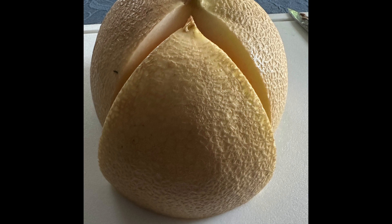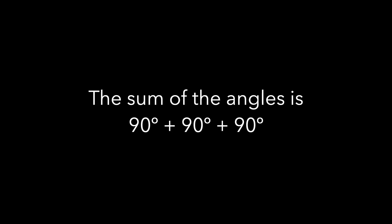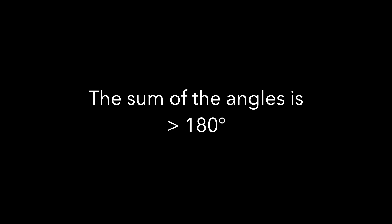There are right angles at the top, at the bottom left with the cutting board, and at the bottom right with the cutting board. I've got a triangle with three right angles. So the sum of the angles is 90 plus 90 plus 90 — it's 270. The point is, we're not in a world where angles add up to 180 degrees anymore. This one adds up to more than 180 degrees.